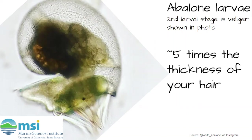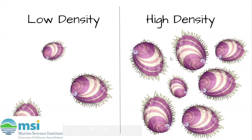Now, why does this matter to the white abalone status in the wild? It has to do with population density, which refers to the amount of abalone in a given space. In this slide, we see a lower density on our left-hand side and a higher density on our right-hand side, because there are fewer abalone in the same amount of space on the left.